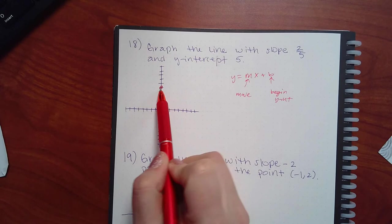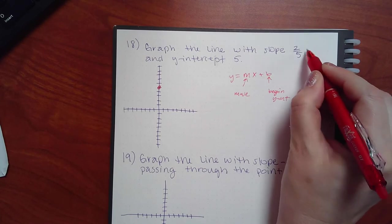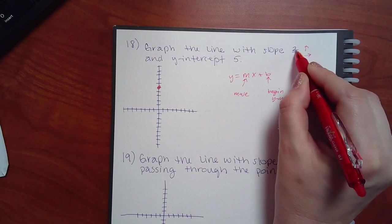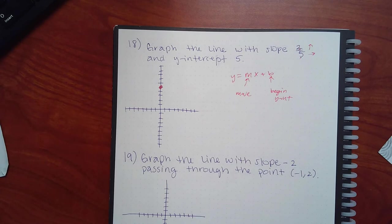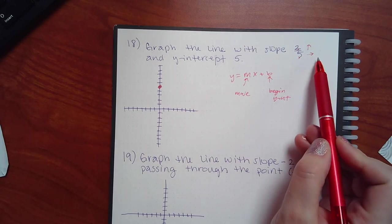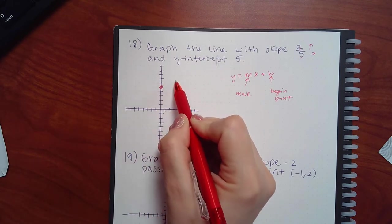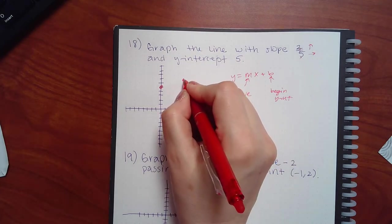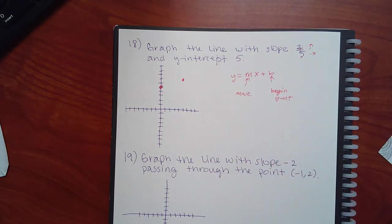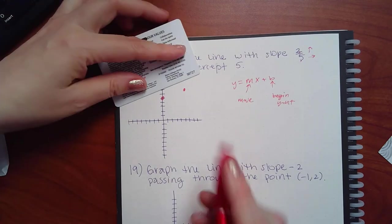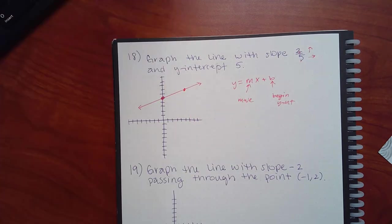The slope is two, so rise two and run one — rise over run. Because it's positive, I go up two then forward one. I always tell people to run forward; don't run backwards. Going up two and over one gives a second point. You could repeat the motion to get more points, but for this system two dots is enough to draw the line.